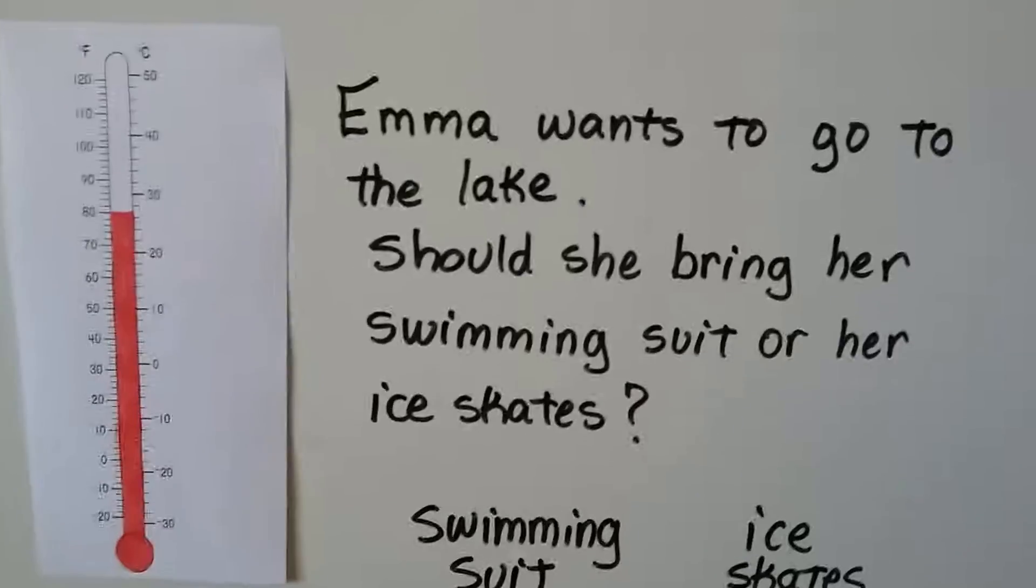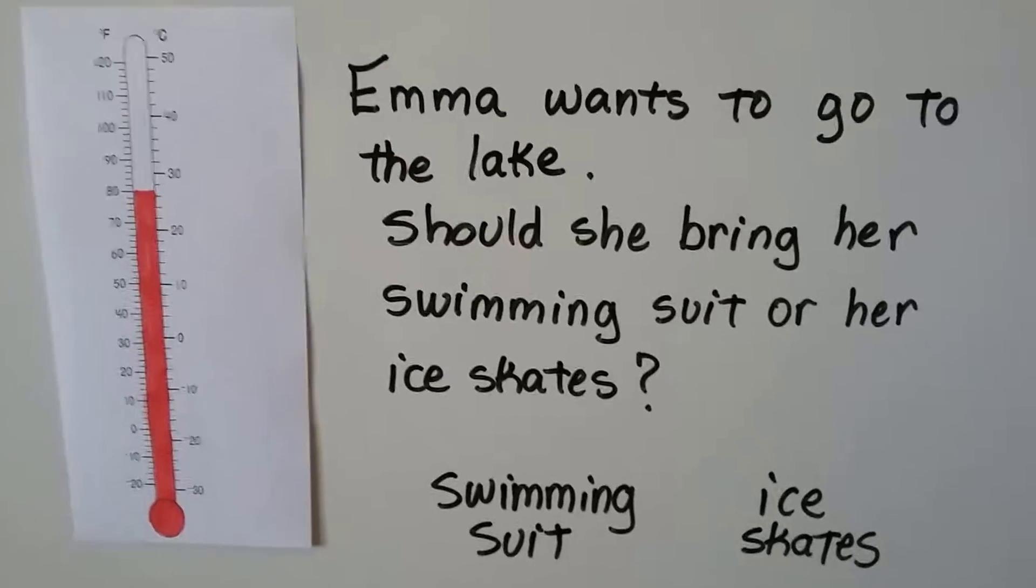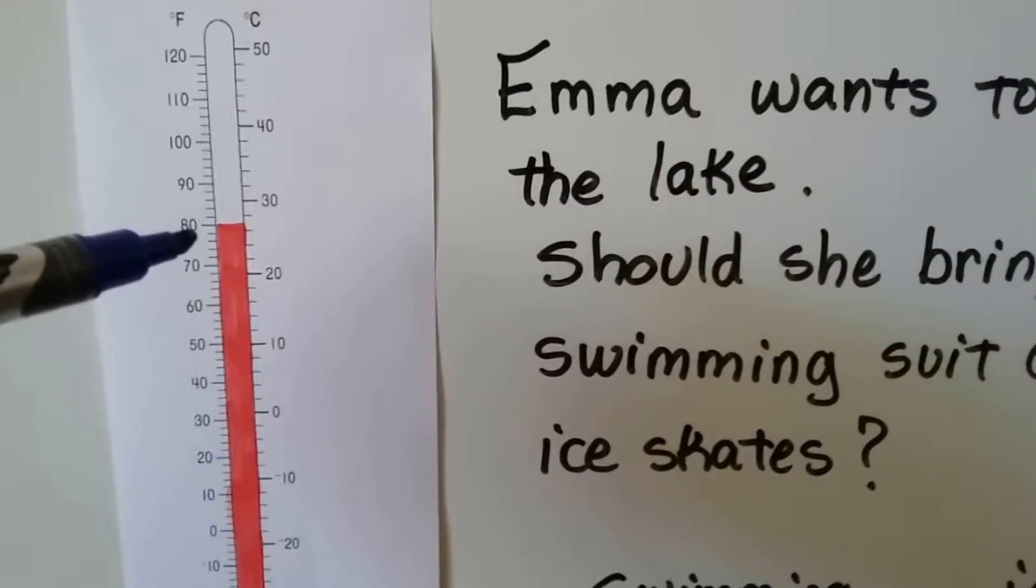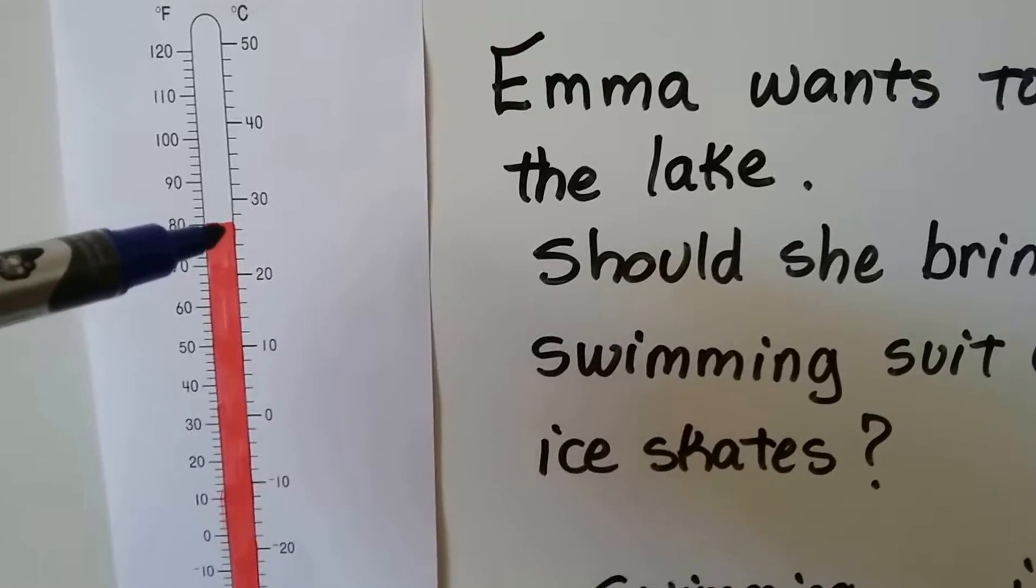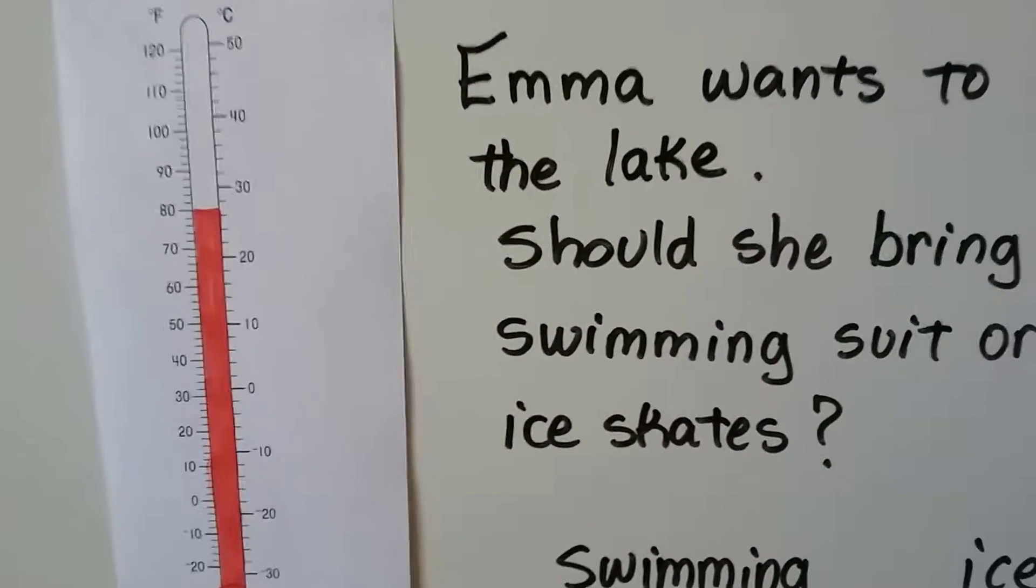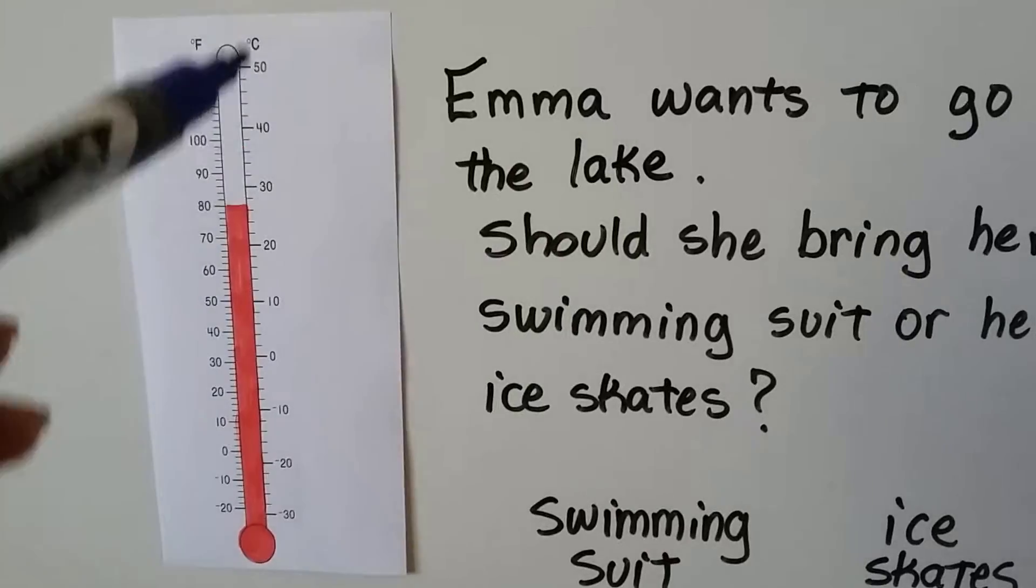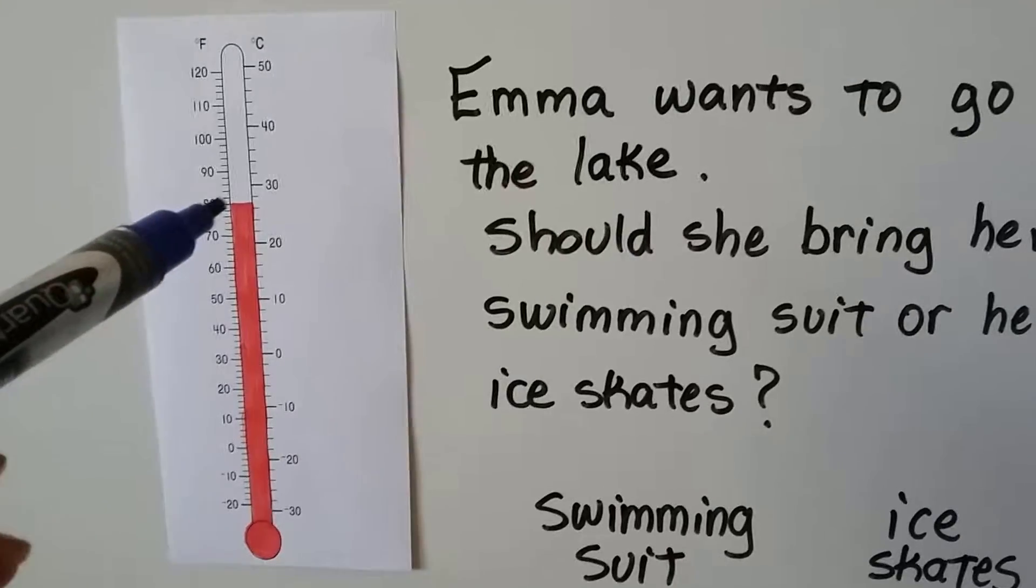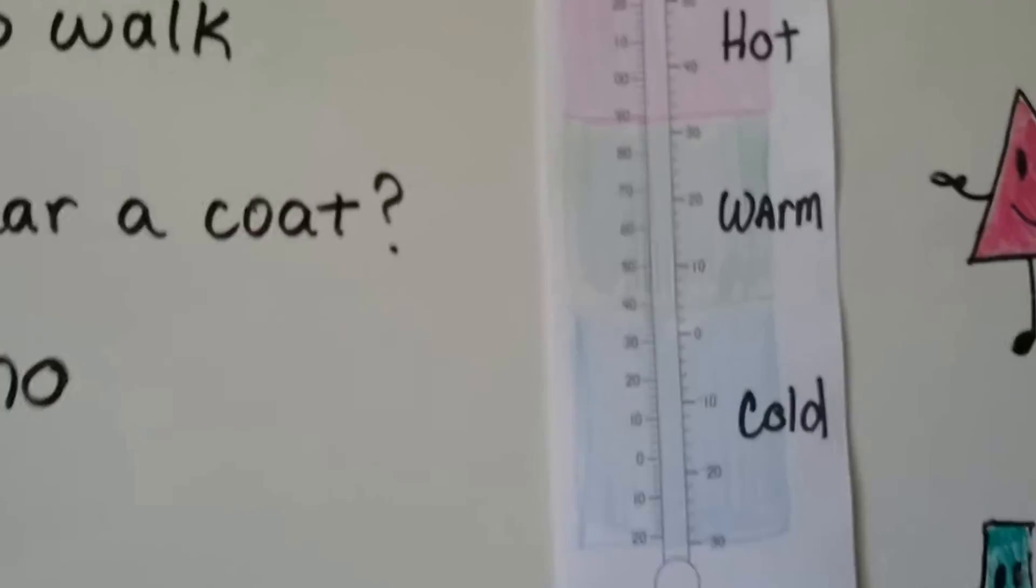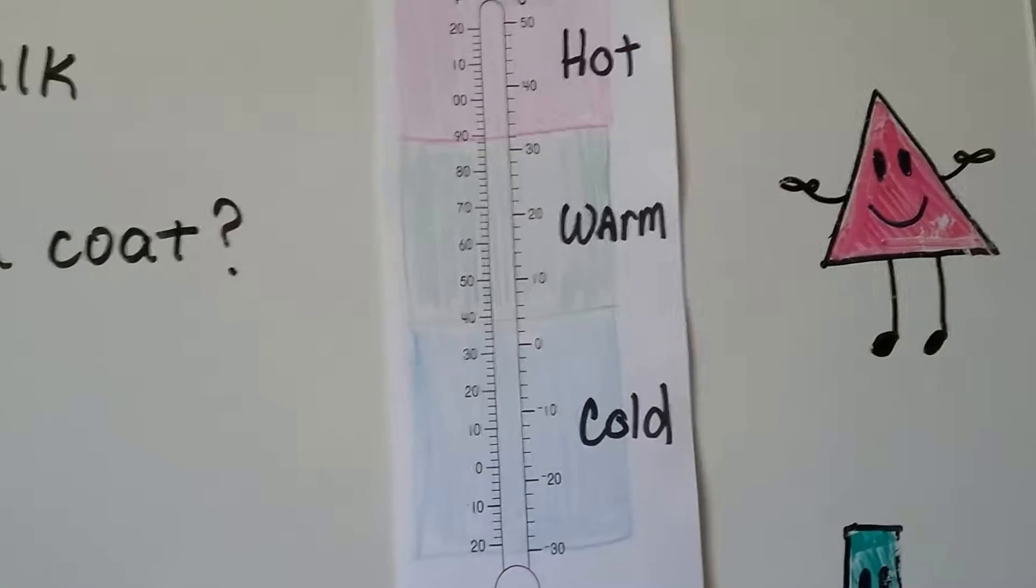How about this one? Emma wants to go to the lake. Should she bring her swimming suit or her ice skates? Well, let's look at the temperature. Fahrenheit is 80 degrees. Celsius is 20, 22, 24, 26. So it's 80 degrees Fahrenheit. It's 26 degrees Celsius. So if we look at the 80 degrees Fahrenheit, and we look on our hot, warm, cold chart, and we see that 80 is right there. See it? In the green, in the warm.